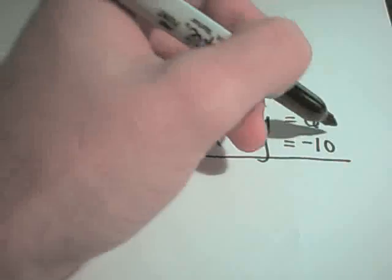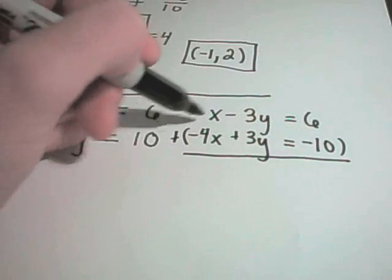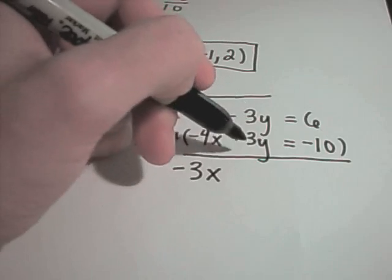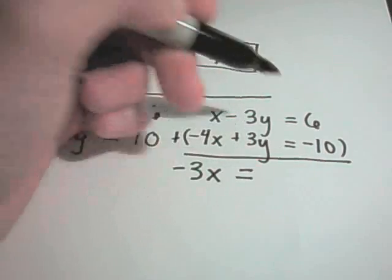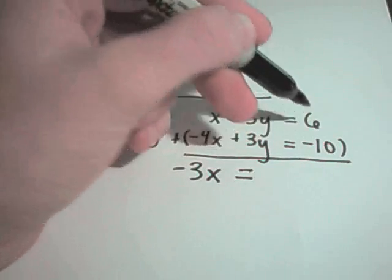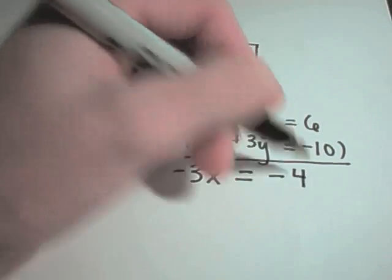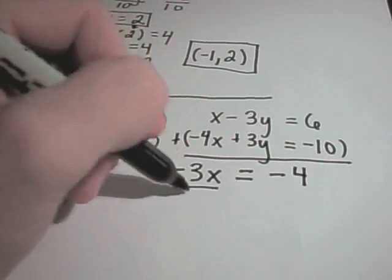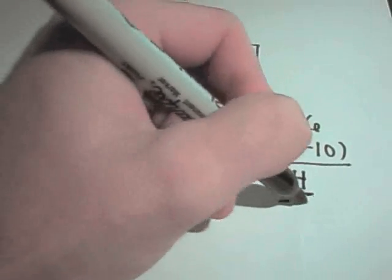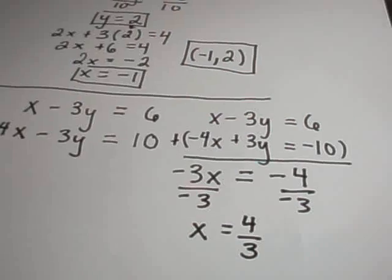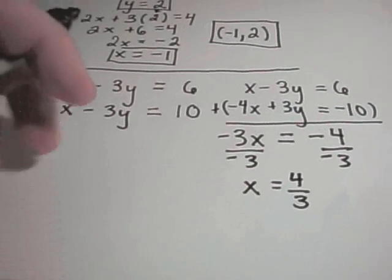So if I do my addition now, x plus negative 4x is going to be negative 3x. My y's are going to cancel out. And then I'll get a 6 plus negative 10, or 6 minus 10. That will give me negative 4. I'll divide both sides by negative 3. And that will give me x equals 4 thirds.